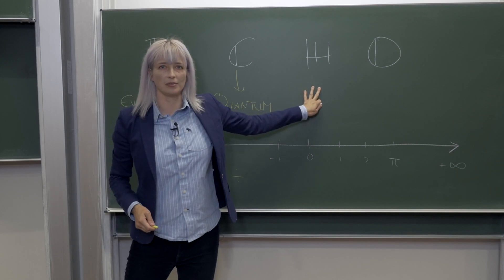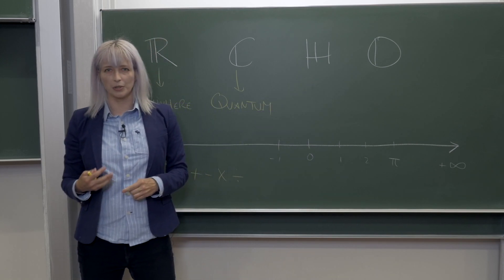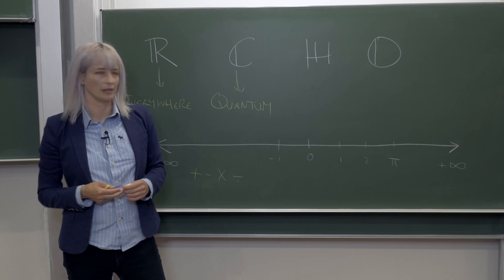Now by the mid-1800s, Gauss and then Hamilton found the quaternions, and it's fairly straightforward to show that the quaternions underlie the structure of Einstein's special relativity.